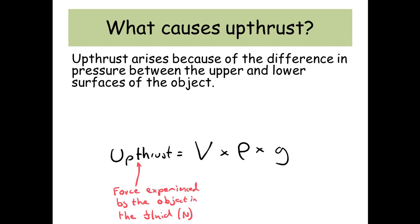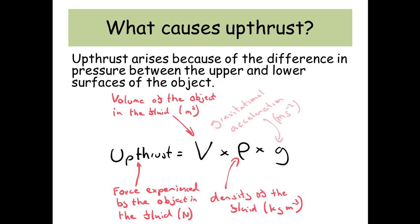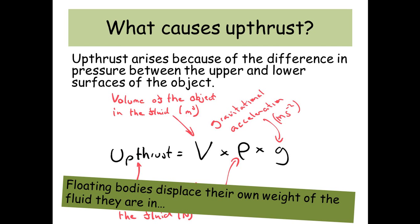So up thrust is the force experienced by the object in the fluid. V is the volume of the object in the fluid in metres cubed. Rho is the density of the fluid in kilograms per metres cubed. And G is the gravitational acceleration in metres per second squared. So floating bodies displace their own weight of the fluid that they are in.